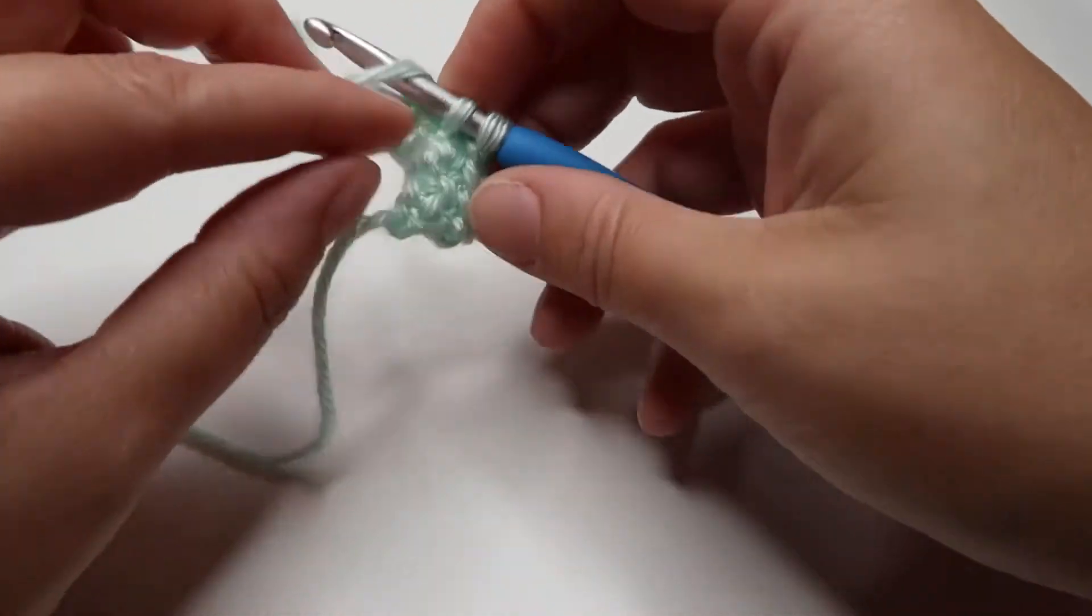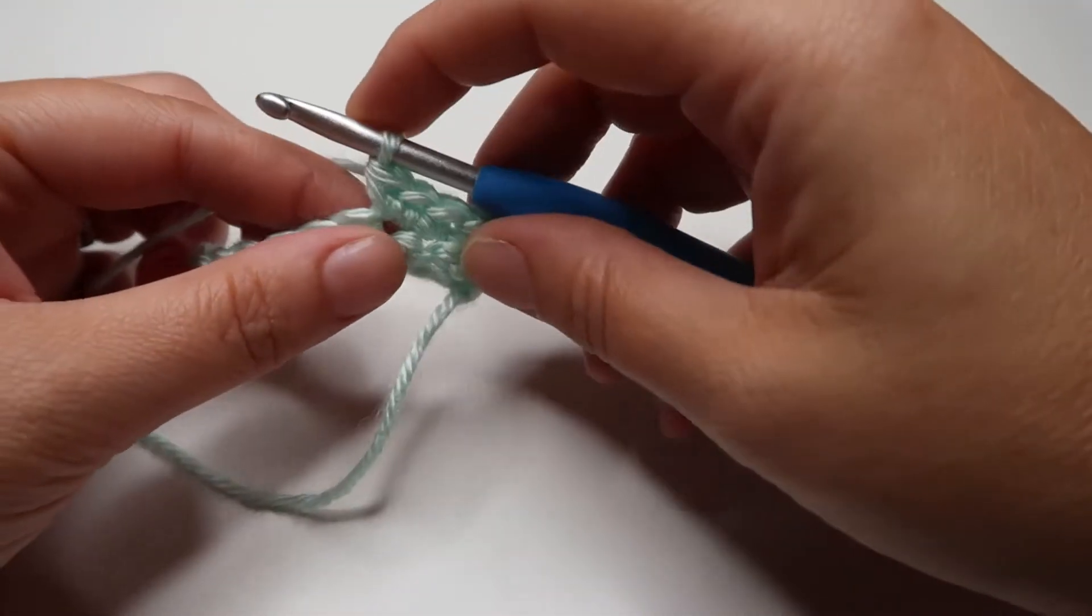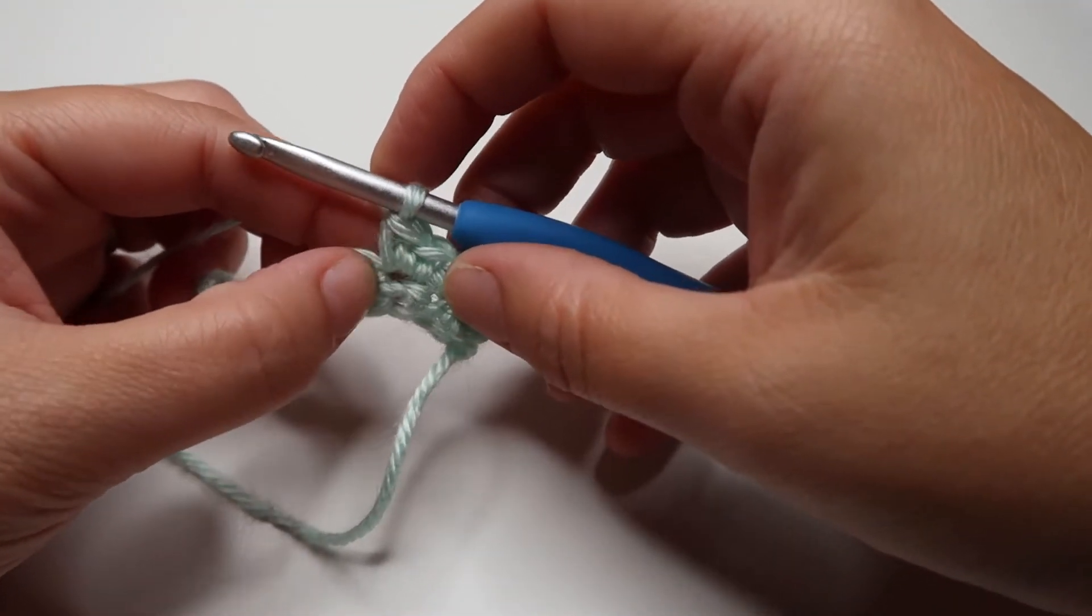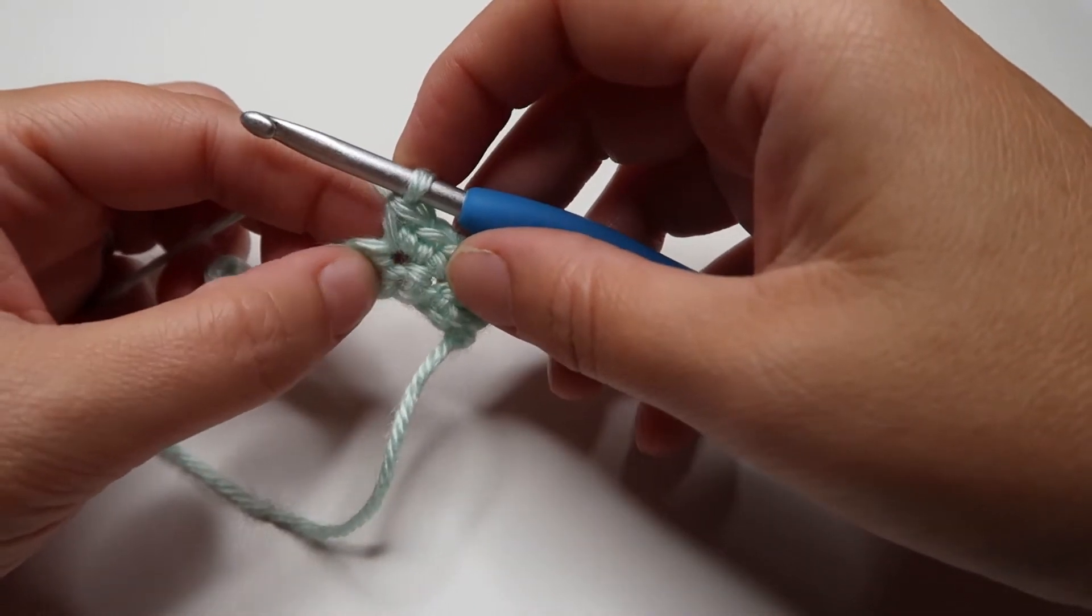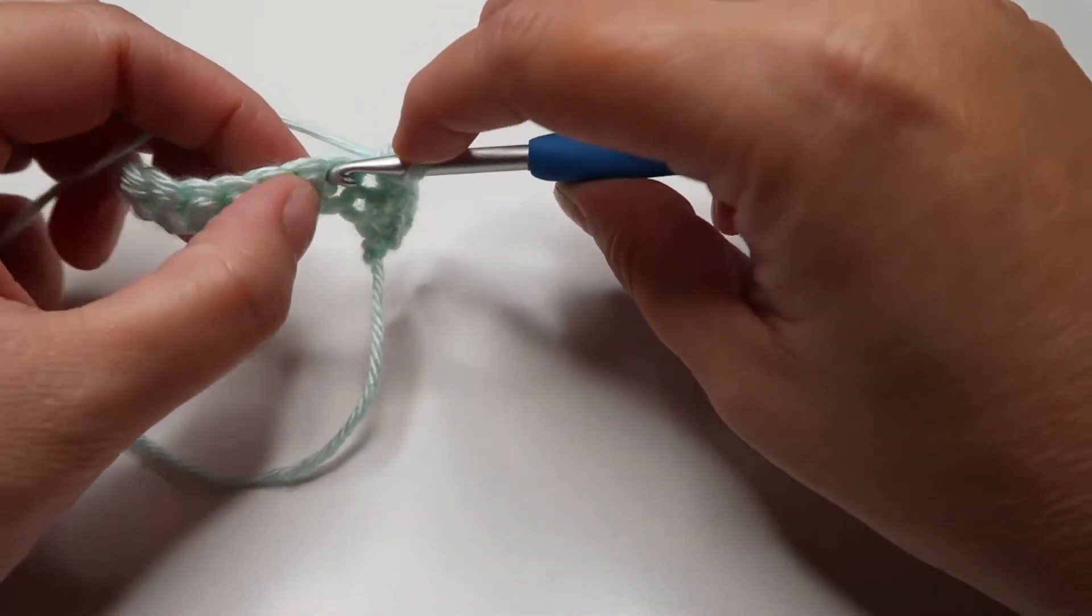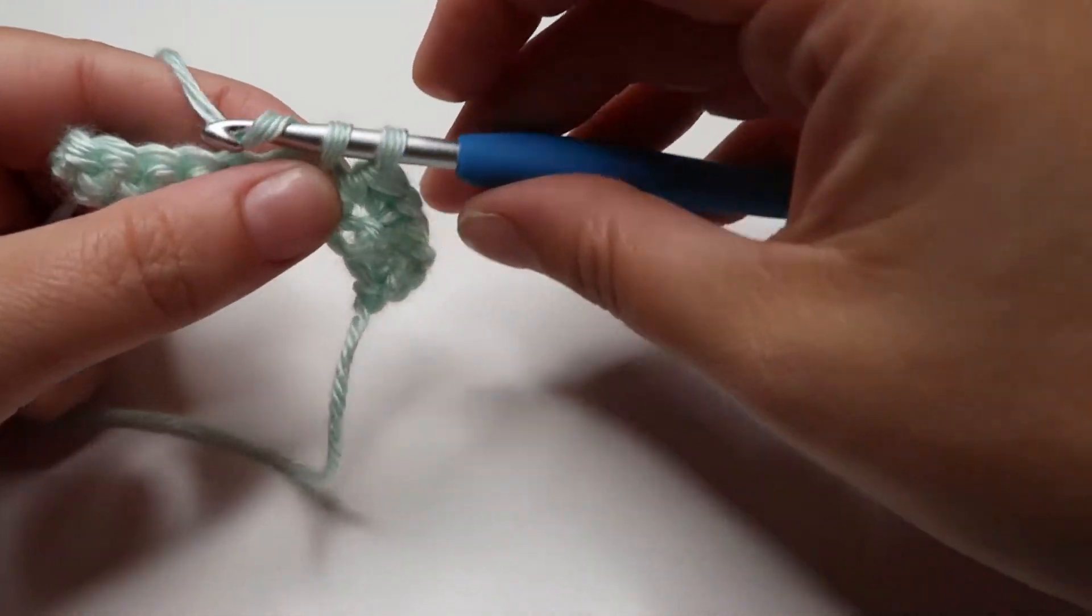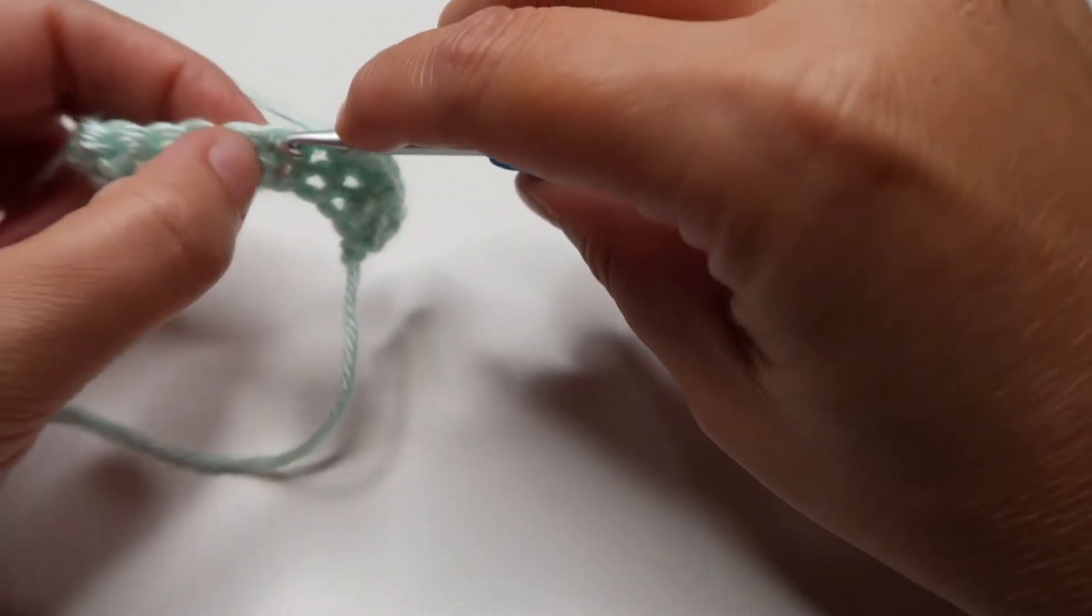Doesn't matter what stitch you're doing—double crochet, treble, half double. If it calls for it, it'll just say two in the next stitch or more. And we'll do two regular single crochets.